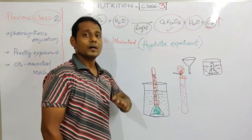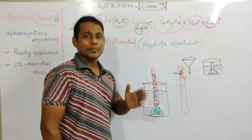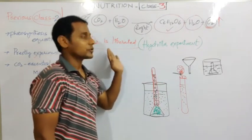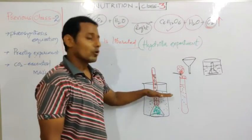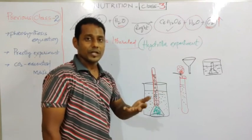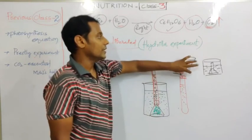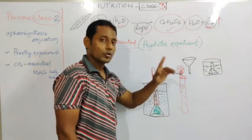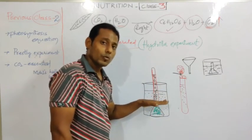This experiment proves that the gas released in the photosynthesis process is oxygen. This experiment is also known as the hydrilla experiment. To recap: you fill a beaker three-fourths with water, place hydrilla plant pieces in it, invert a short-stemmed funnel over the plant, and then place a water-filled test tube inverted on the funnel stem.